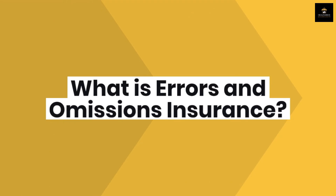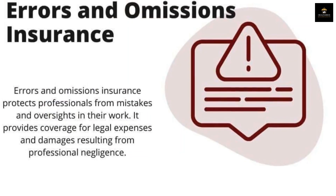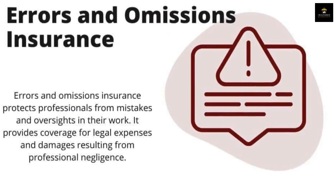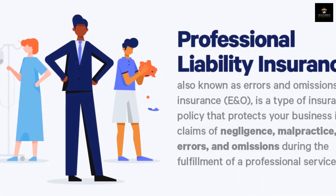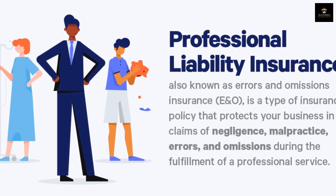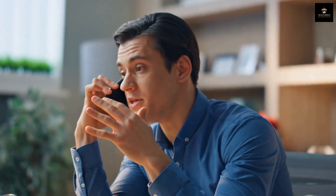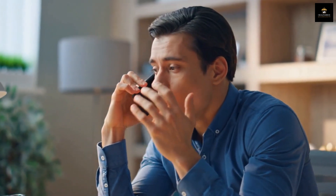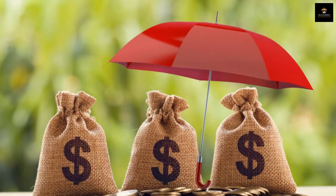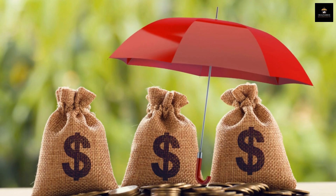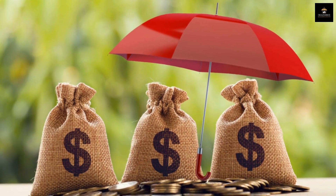So, what exactly is errors and omissions insurance, or E&O for short? It's a type of professional liability insurance that covers your business in case you're accused of making a mistake, missing a deadline, or not delivering on a contract. Even if the accusation is totally false, legal expenses can add up quickly. E&O insurance helps you cover those costs, saving you from out-of-pocket expenses and keeping your business running smoothly.